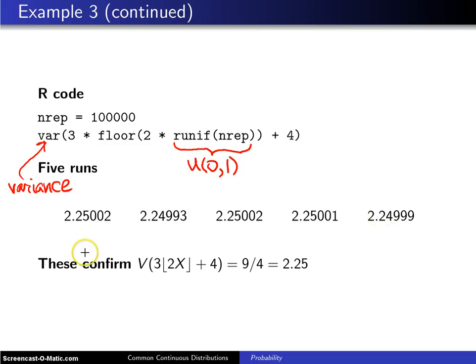And these confirm, and actually I'm going to make this important point here, confirm should be in quotes. Really the appropriate word here is these support the fact that the variance is 9 fourths. You can never confirm with a Monte Carlo simulation. It is not a proof. It is just some evidence along those lines.